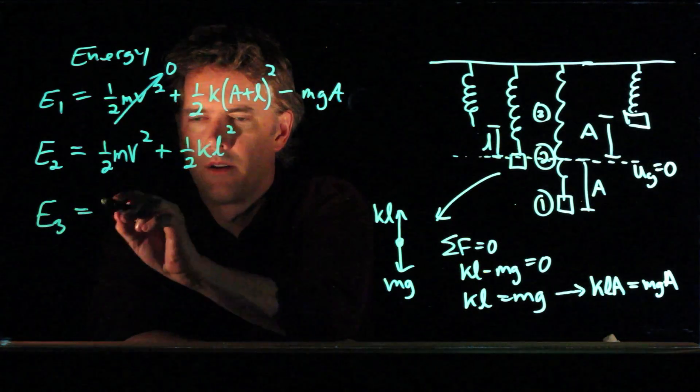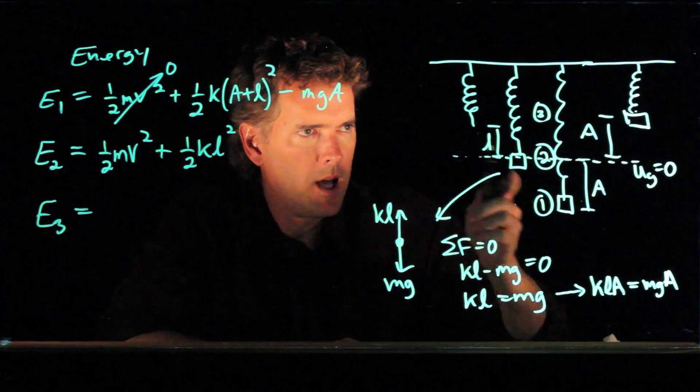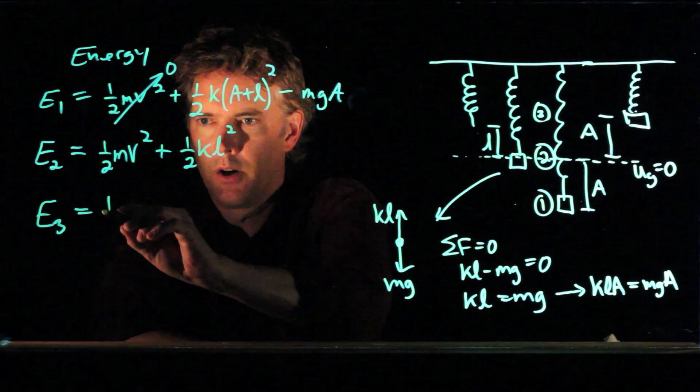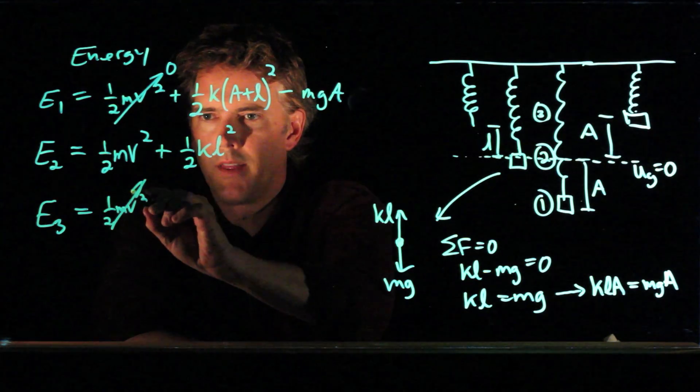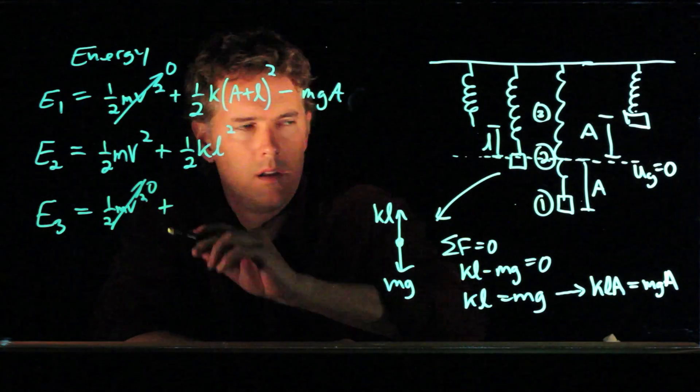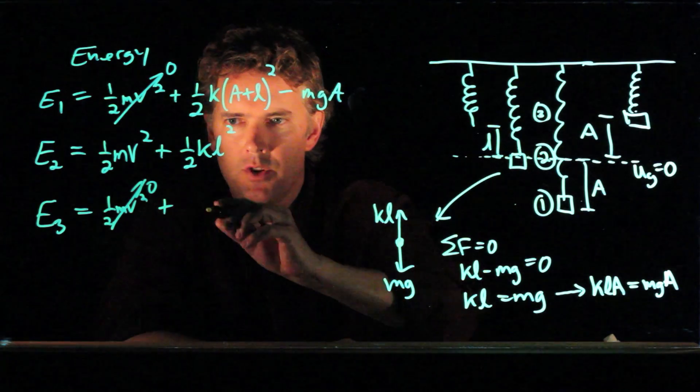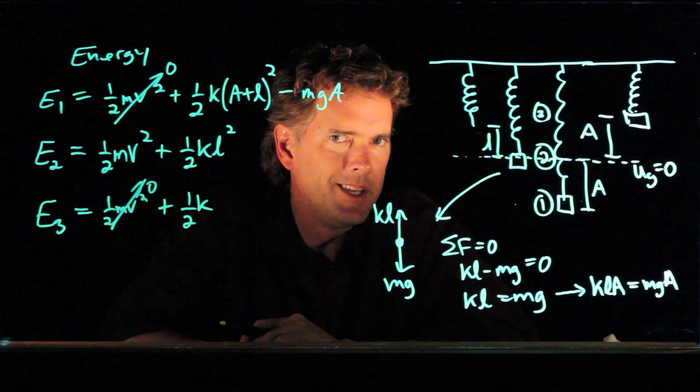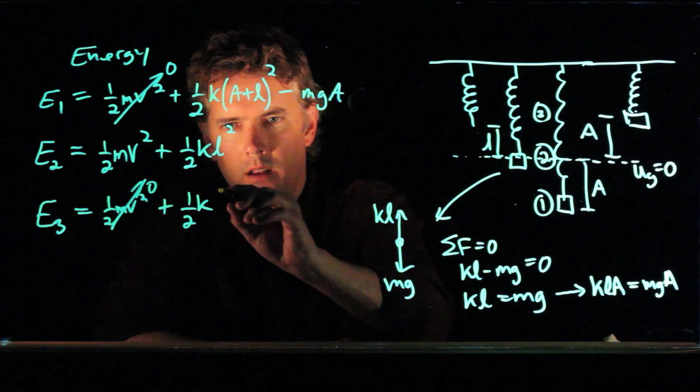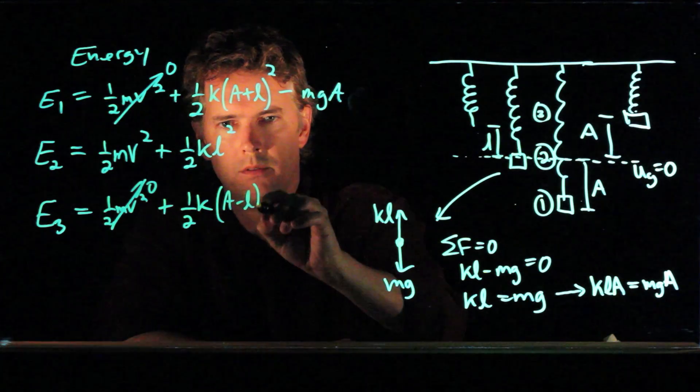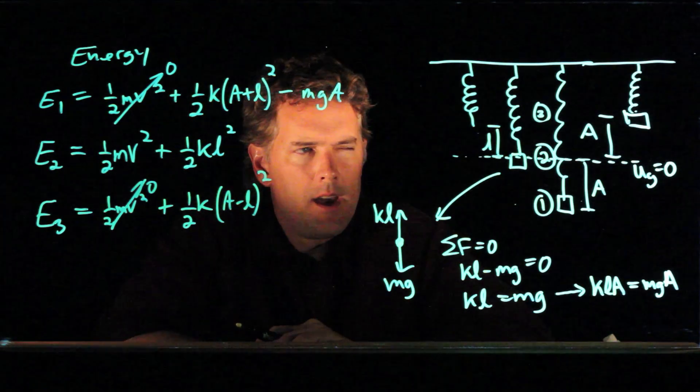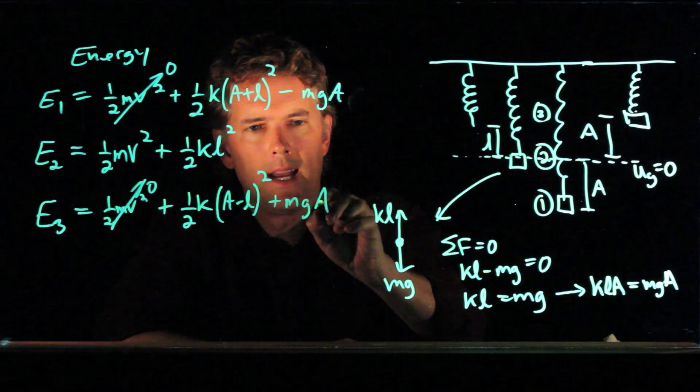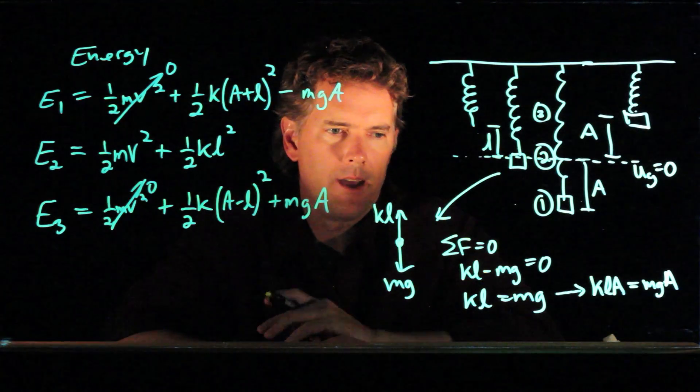All right, what about E3? E3 is when the block is moved all the way up to the top of its motion. And let's see what we have for those terms. We don't have any kinetic energy. It's come to rest up there, so that one's zero. We might have a little bit of stretch in that spring still. And the amount of stretch is going to be the difference between A and L. So we have to subtract those two. And we have some gravitational potential energy because it's up at a height A, and so we have to add M G A.